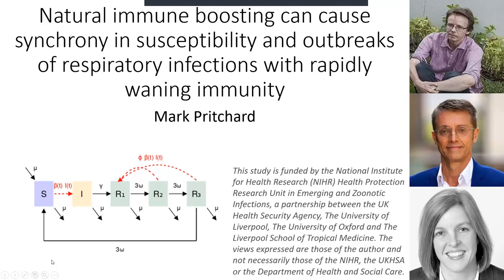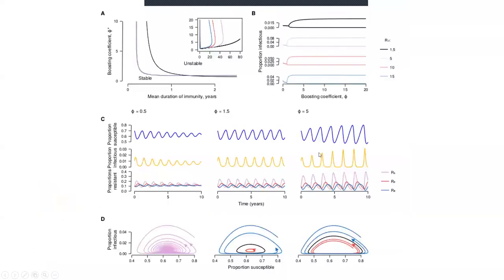This has been done for things like pertussis, varicella, and measles. But no one's really looked at it before for respiratory viruses where immunity tends to wane much more rapidly. So we're interested in what would happen for a disease where immunity only lasts maybe one or two years.